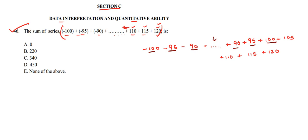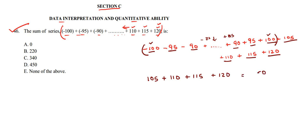You can see that we have minus 100, minus 95, minus 90, and here we have plus 90, plus 95, plus 100. In the middle we have the same numbers, such as minus 85 and plus 85. So up till 100, all the numbers get cancelled out because we have the negative of each number and also the positive. We are left with only 105, 110, 115, and 120. Adding these four terms gives us 450.